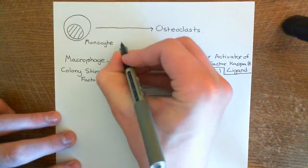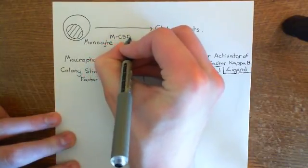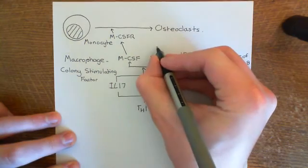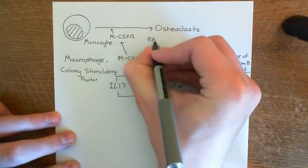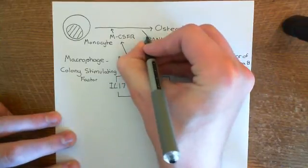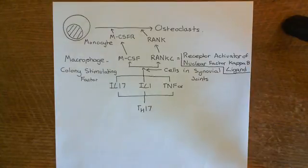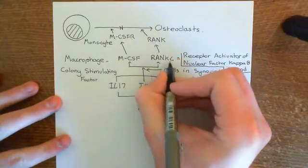MCSF acts on the macrophage colony stimulating factor receptor on the surface of monocytes, triggering the first part of their differentiation into osteoclasts. Then RANKL — the receptor activator of nuclear factor kappa B ligand — acts on RANK, the receptor activator of nuclear factor kappa B, and that causes the second part of the differentiation into osteoclasts.